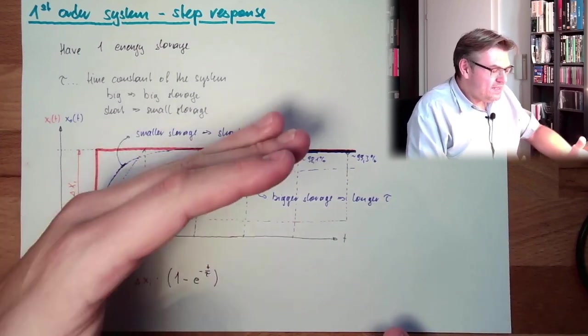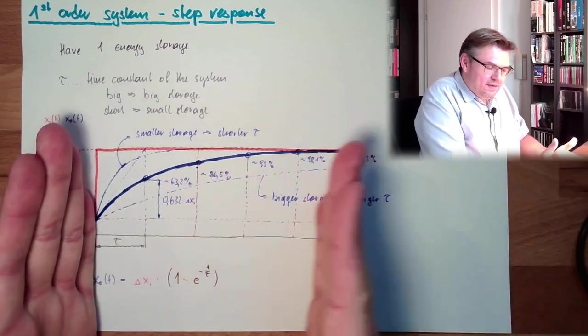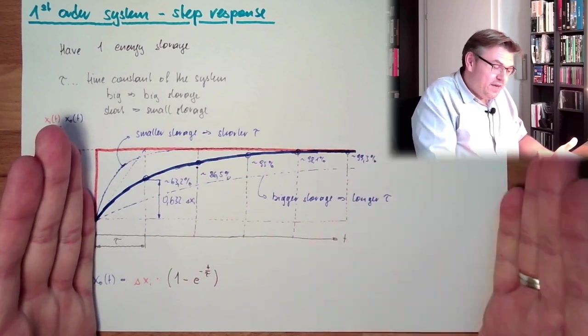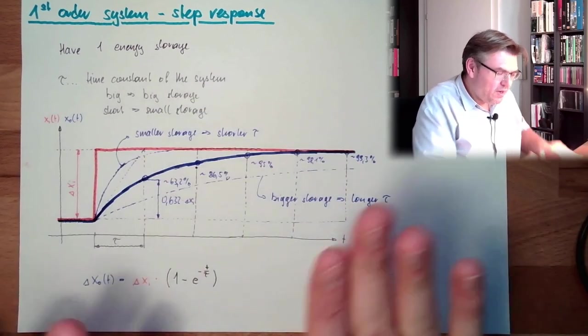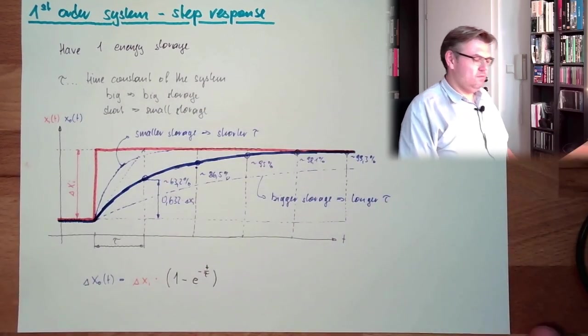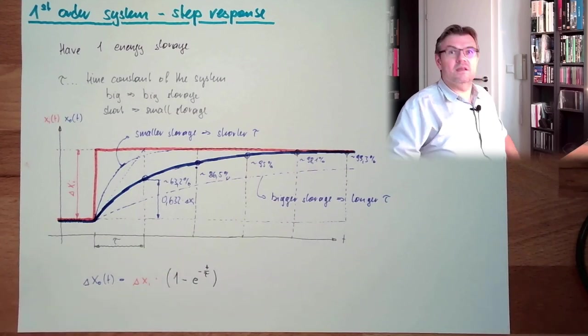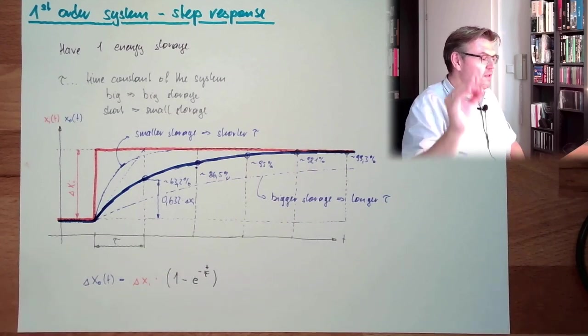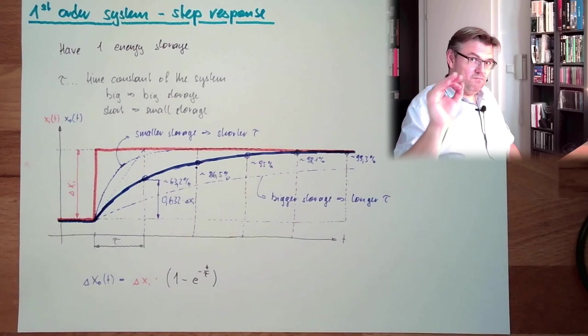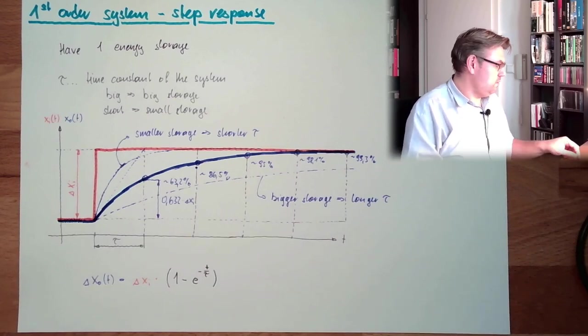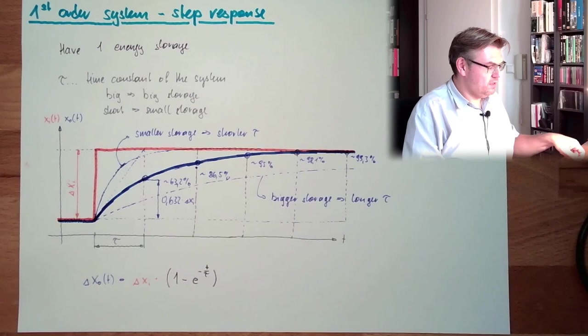But the basic, if we just zoom the time axis, change the scaling of the time axis, it will always look like that, depending just on this time constant. And the time constant, this is the characteristic value for a system first order.